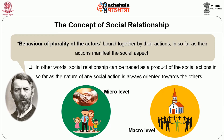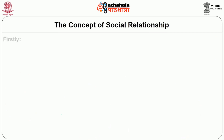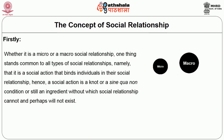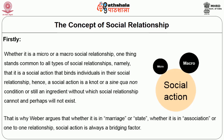From the above insight, we draw a few implications. Firstly, whether it is a micro or macro social relationship, one thing stands common to all types: it is social action that binds individuals in the social relationship. Hence, social action is a sine qua non condition — an ingredient without which social relationship cannot and perhaps will not exist. That is why Weber argues that whether it is marriage or state, whether it is an association or a one-to-one relationship, social action is always a bridging factor.